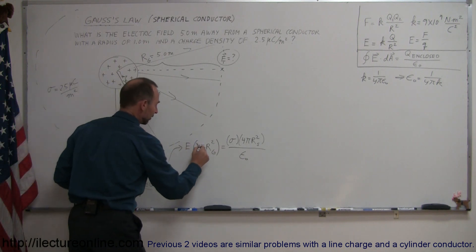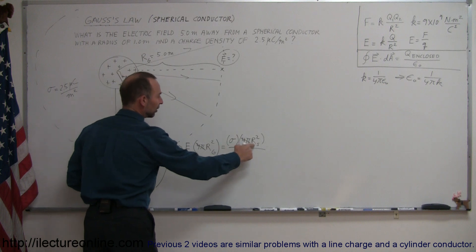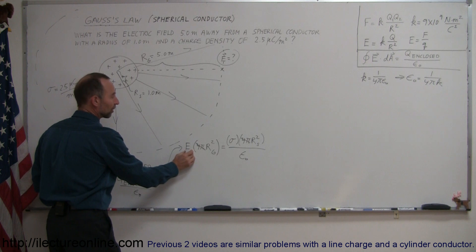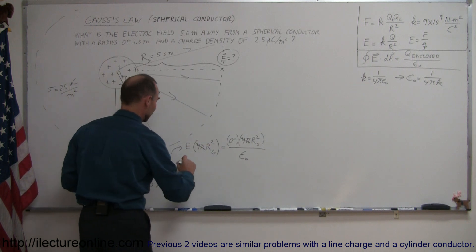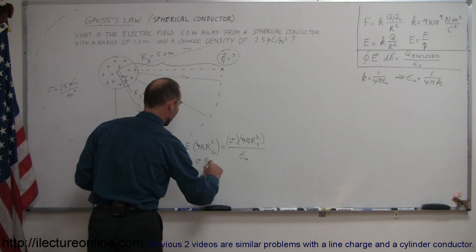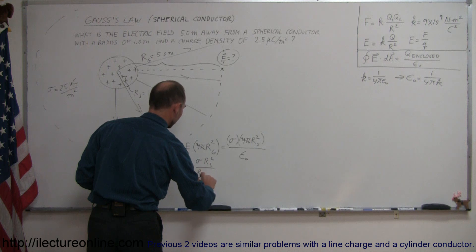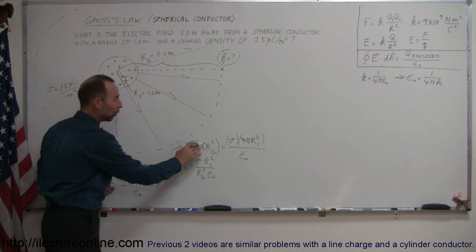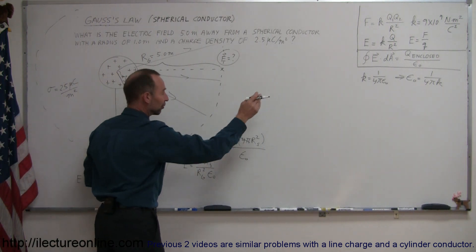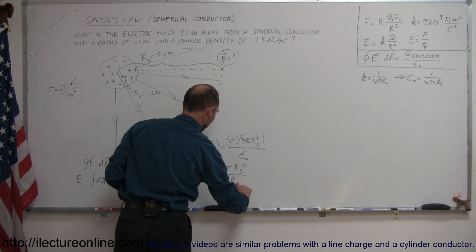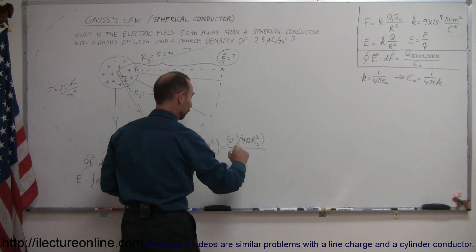Notice that 4π appears on each side and cancels out. R sub g and R sub s are not the same, so they don't cancel. To isolate E, we divide both sides by r sub g squared, giving E equals sigma times r sub s squared divided by r sub g squared times epsilon sub nought. Since epsilon sub nought equals 1 over 4πk, taking the inverse gives E equals sigma times r sub s squared divided by r sub g squared times 4πk.